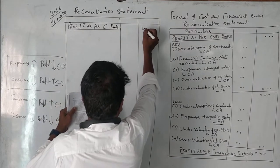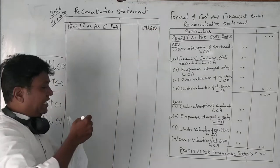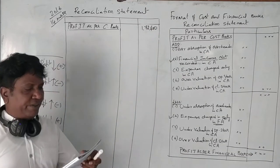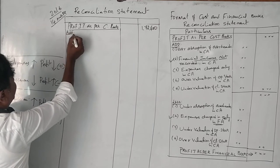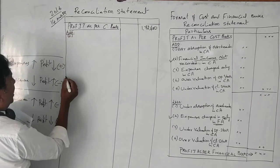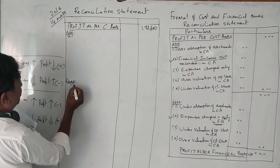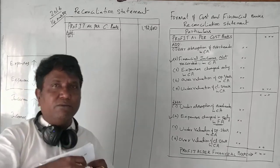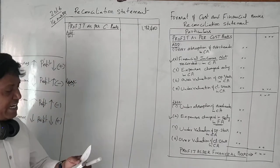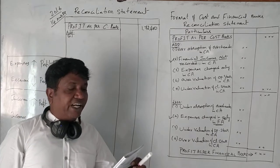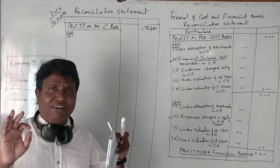Net profit as per cost accounting records is given as 1,72,400 rupees — that's our base figure. Now we should add certain items (plus) and deduct certain items (minus). Let's see what items we need to add and what items we need to deduct. Works overhead under-recorded in cost accounting — the question is very clear.